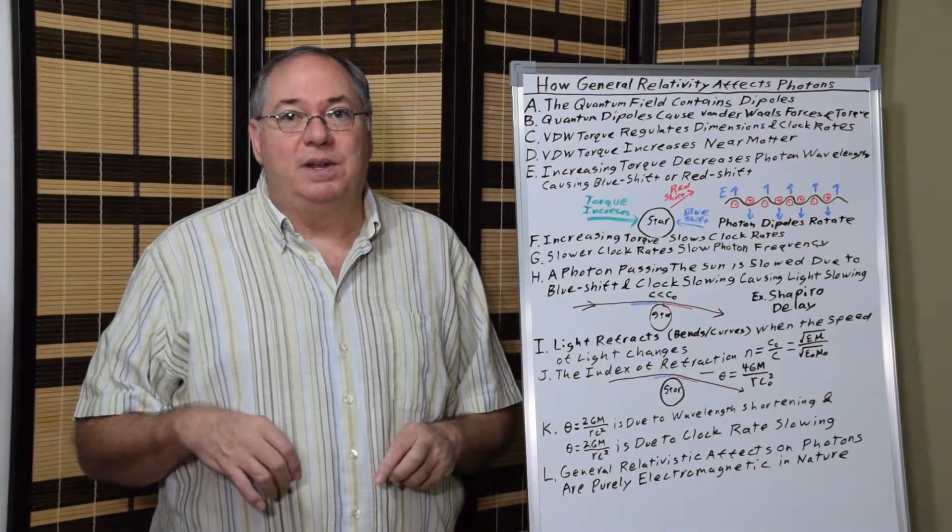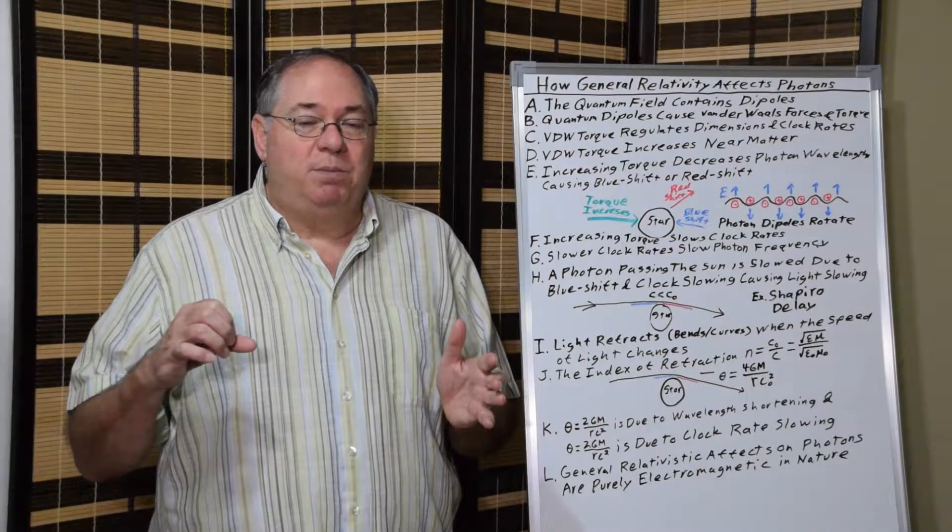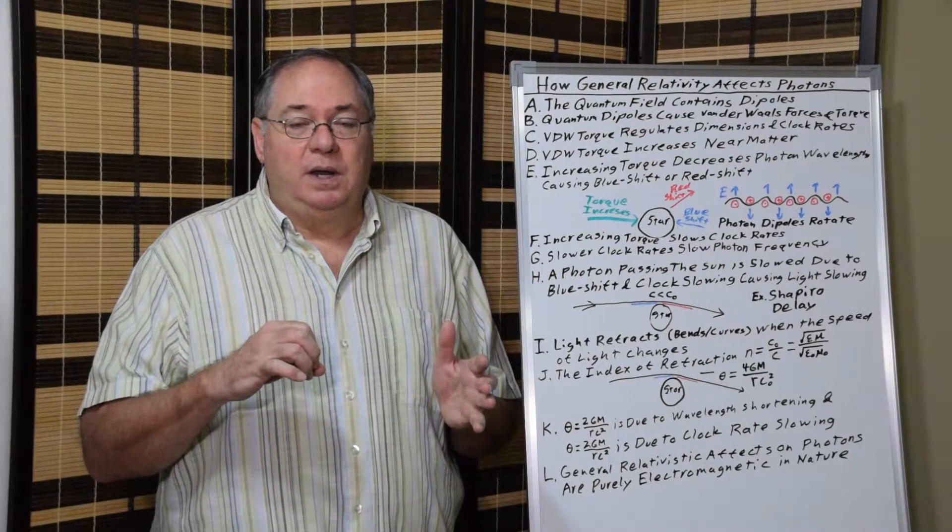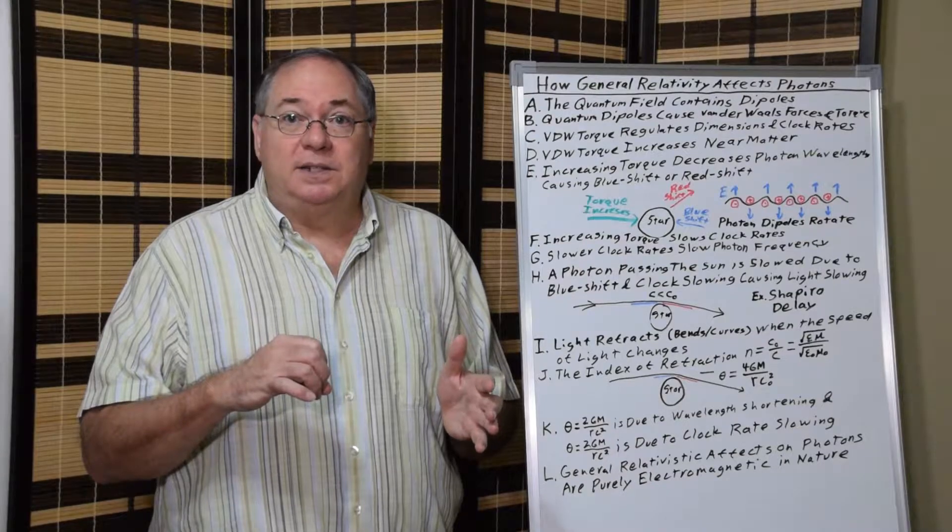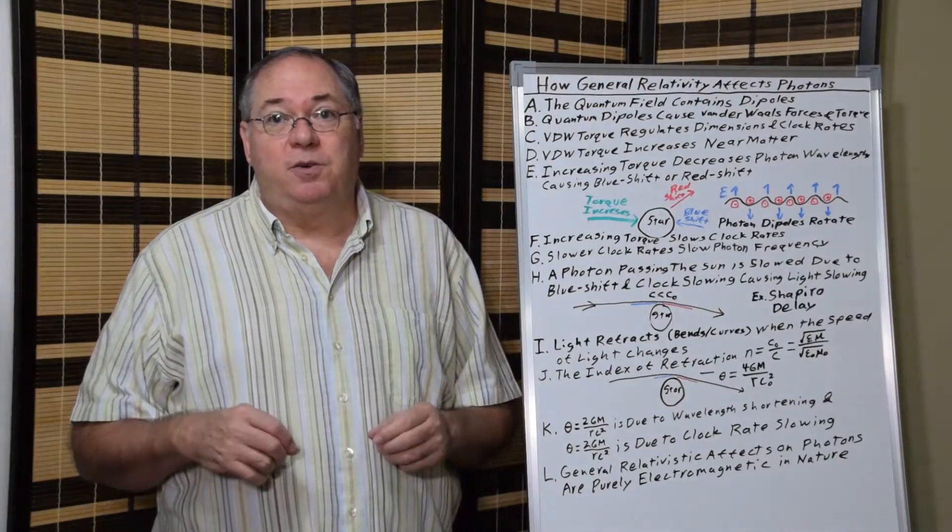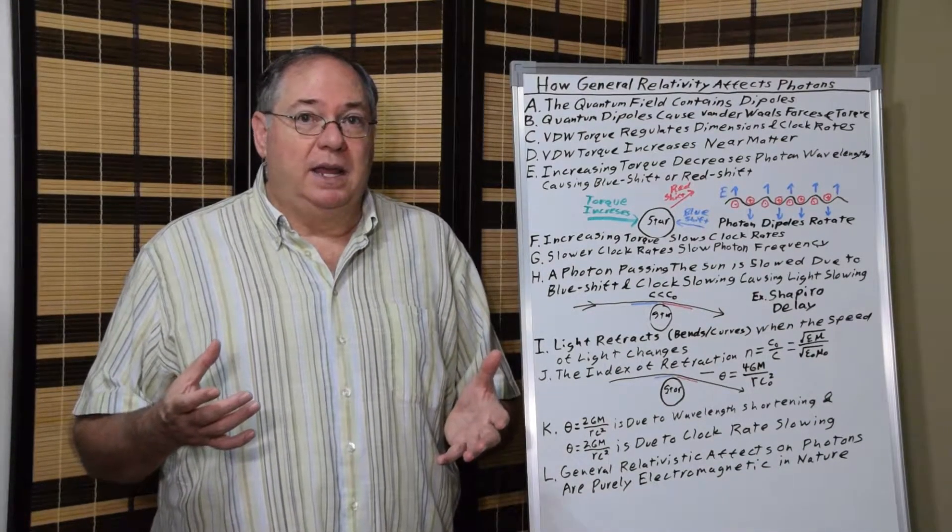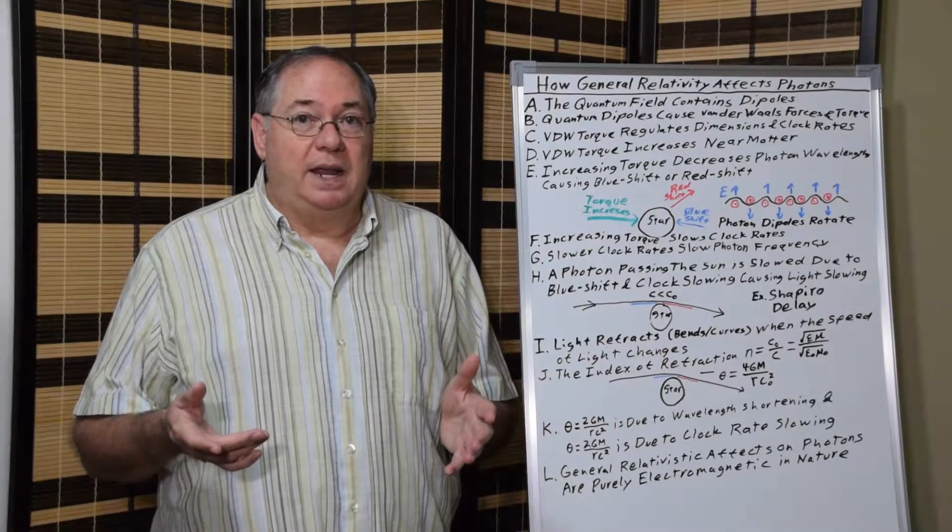So the speed of light limit on electrically neutral bodies is due to electrical interactions and the van der Waals torque in the quantum field. This produces the limits for electrically charged bodies and light itself, and gives the speed of light to electrically neutral bodies, which tells us that inertia is electrical in nature.